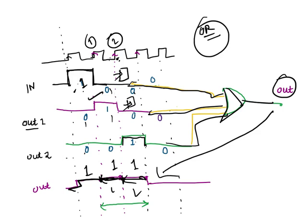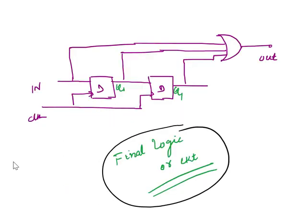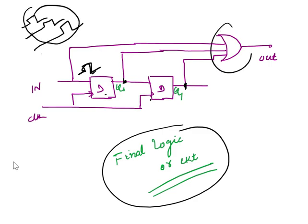So the final logic diagram is this one. This is your input, which goes into the first flip-flop — giving the delayed version — and then into a second flip-flop, giving another delayed version. We have two flip-flops, so the signal will be delayed for two clock pulses. If we add all three signals — the original input plus the two delayed versions — with the help of an OR gate, we get the output extended for two clock periods. This is our requirement.